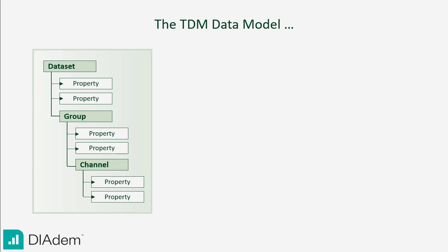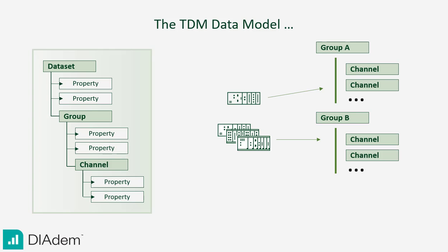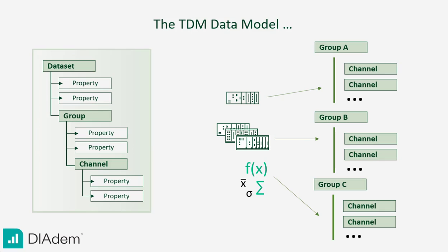Channel Groups group channels and help structure data. For example, Channel Group A could contain the measured data from measurement device A, Channel Group B the data from device B, and Channel Group C could contain the analysis results.